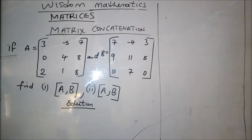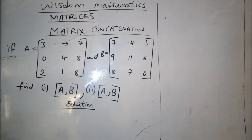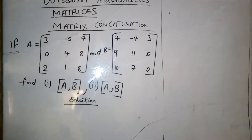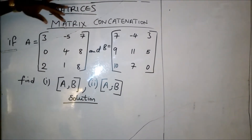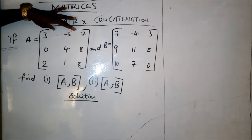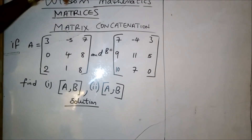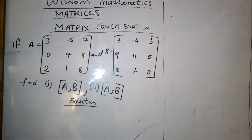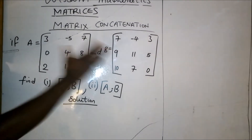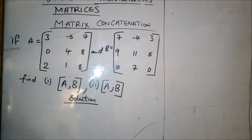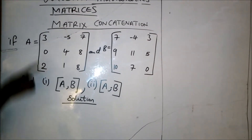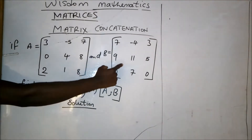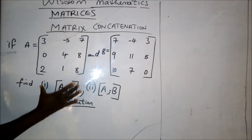In concatenation, there is not much work. In the horizontal concatenation, we write the entries of the first matrix, then we write the entries of the second matrix beside it, so that the two of them will be side by side. In the vertical concatenation, we write the elements of the first matrix, then the elements of the second matrix will go under it.